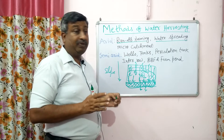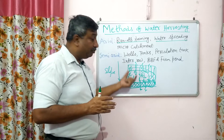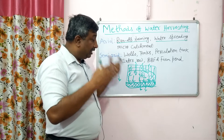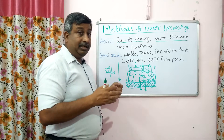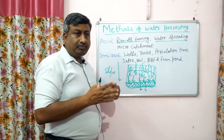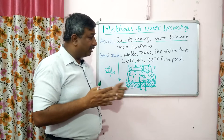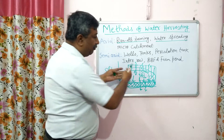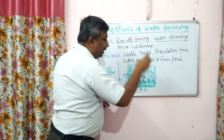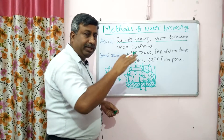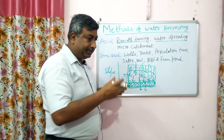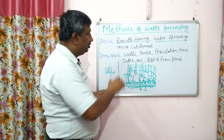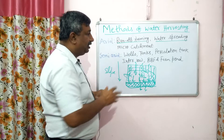Water spreading is not suitable for high rainfall areas because the volume and kinetic energy are very high and the bunds cannot check the water. The purpose is to spread water all around so it percolates slowly and keeps the roots moist.